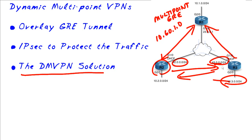That is the high-level overview of how Dynamic Multipoint VPNs work. The beauty is that these remote devices don't have to have a static IP address. We can have 20, 30, or 40 branch offices all pop up, report into the hub, and dynamically build tunnels between each of the branch offices — all through the beauty of Dynamic Multipoint VPNs. I hope this has been informative for you, and I'd like to thank you for viewing.